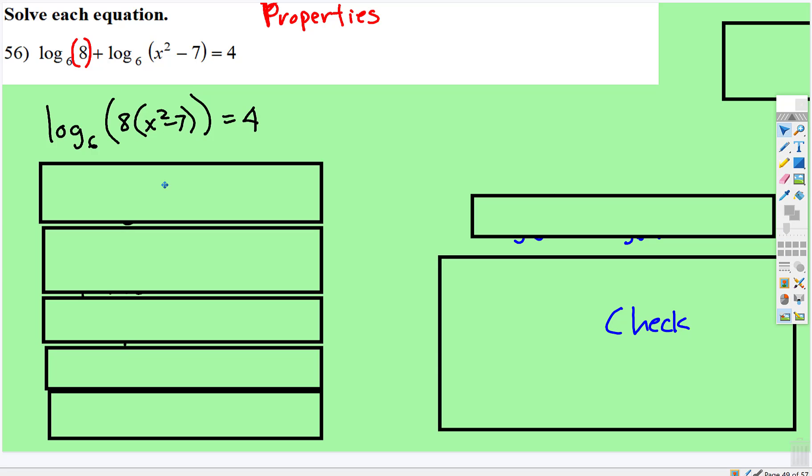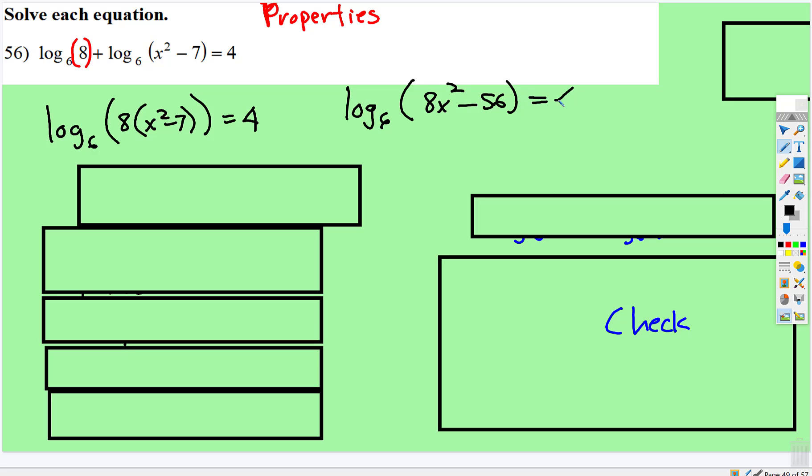Let's simplify that out. Log base 6 of 8x squared minus 56 is equal to 4.